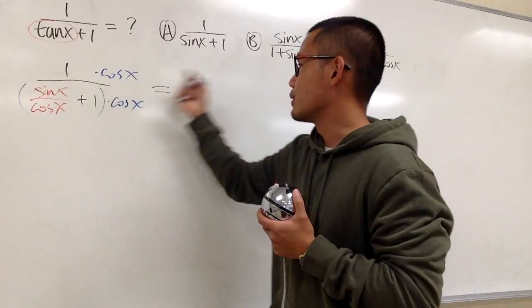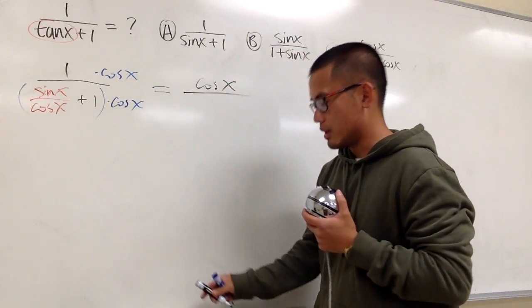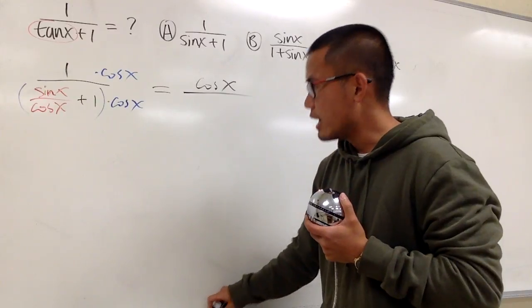On the top, 1 times cosine x is, of course, just cosine x. I'll put this over, and I'll put this down in red.